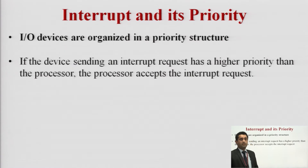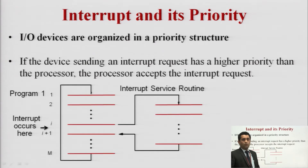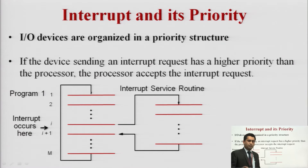This is done with the help of polling. There is one more mechanism — daisy chaining. In daisy chaining, the interrupt goes to all devices one by one. If one device does not want to send the data, control passes to device two. Let us look at how the interrupt is raised and what the process is for defining and executing a particular interrupt.